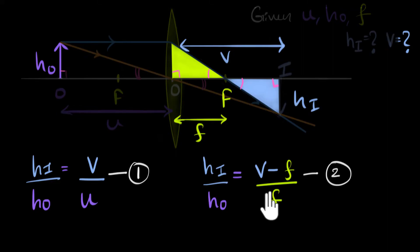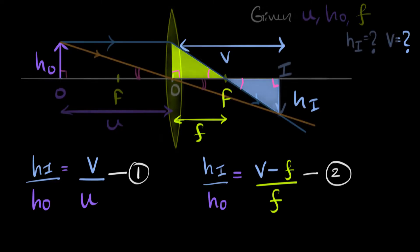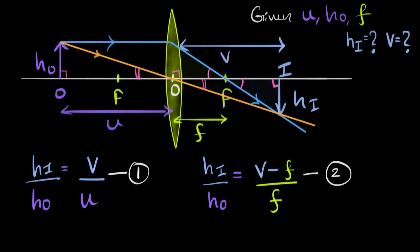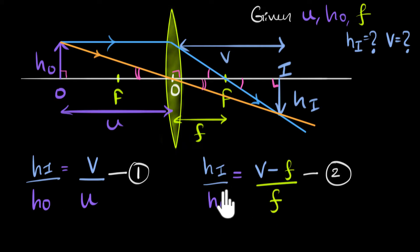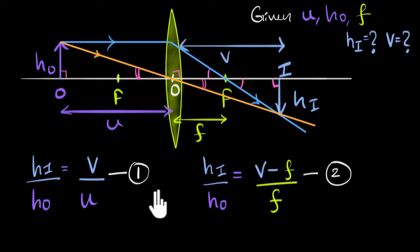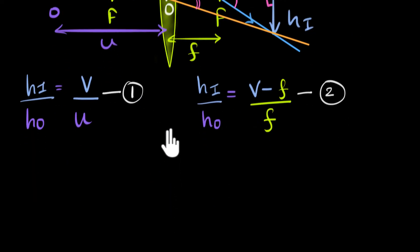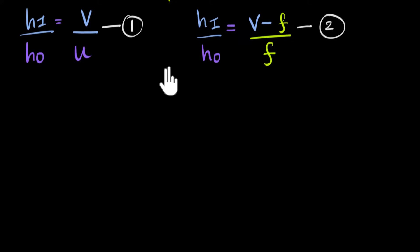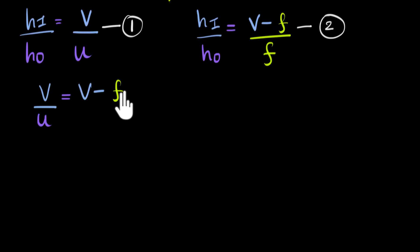Now we have two equations with just two unknowns, so we can eliminate them and figure out the height and image distance. The geometry is done and now all we have to do is algebra. Since both equations have the same left-hand side, we can equate the right-hand sides: V divided by U equals V minus F divided by F.